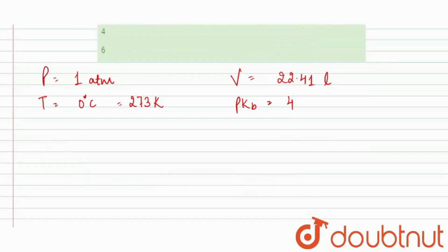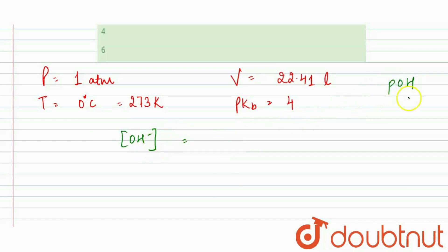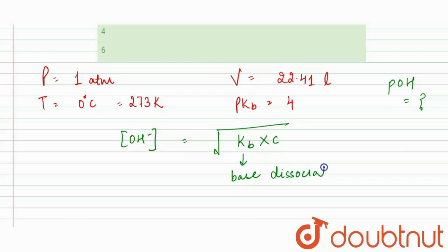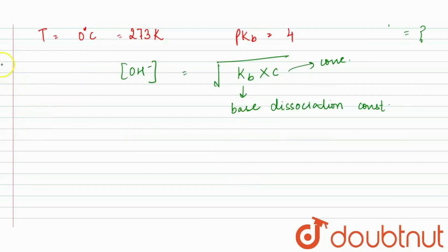Now, if we consider the concentration of OH⁻ negative ions — since we have to find the POH — we know that the concentration of OH⁻ is equal to the square root of KB into C, where KB is the base dissociation constant and C is the concentration. Taking log on both sides.